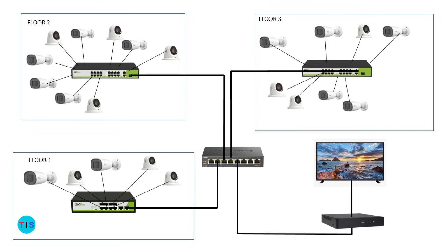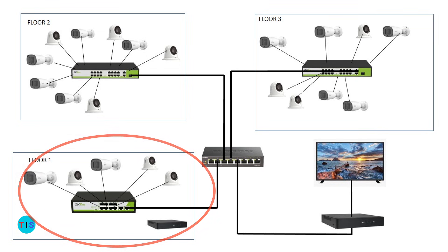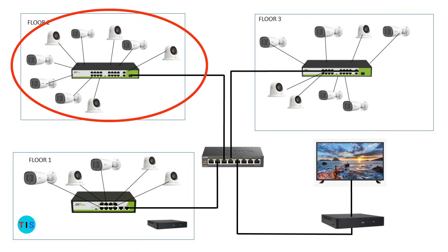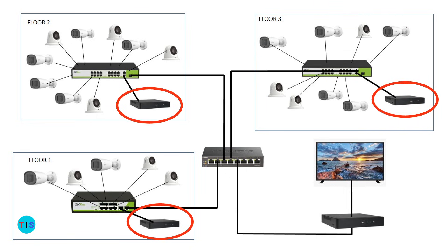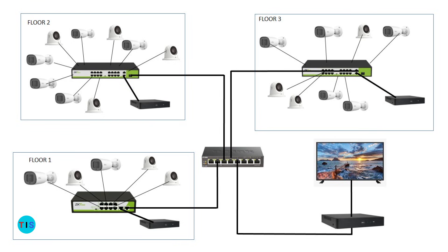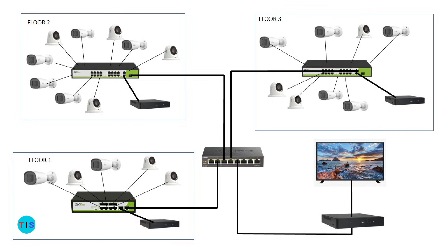One way to decentralize the recording going to that centralized network video recorder is to have recorders on each floor. Floor one, floor two, and floor three would each have a network video recorder, so that in addition to the main NVR, there is a recorder capturing the video of cameras on each floor.